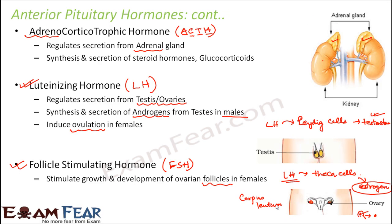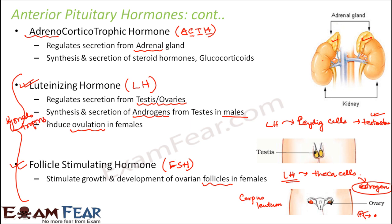The luteinizing hormone and the follicle stimulating hormone both stimulate gonadal activity — that is the female gonads, the sexual organs. They help in the growth and development of the sexual organs, and that is why both of them together are known as gonadotropins — LH and FSH.